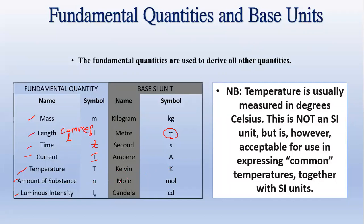Amount of substance has the symbol lowercase n, and its unit is the mole — spelled M-O-L, without the E. Luminous intensity is measured in candela. The symbol for luminous intensity is lowercase l with a subscript V, and the symbol for the base unit candela is lowercase c, lowercase d.